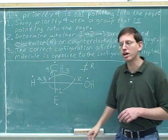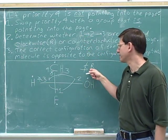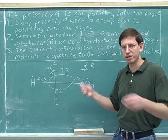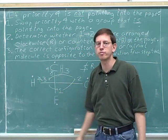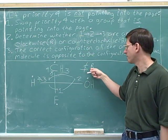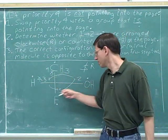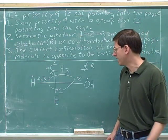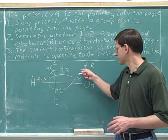Let's review the notation. Once we saw the number four was not pointing into the page, step one was to swap priority four with a group pointing into the page — and all we had to do was swap the numbers, not redraw the molecule. It's a good idea to cross out your original numbers and write down the new numbers. Then step two, we wrote down the letter S. And then step three, we crossed out the letter S and wrote down R. I recommend you actually write down the letter in step two, then cross it out and write the new letter in step three. Writing those extra steps down on paper makes us less likely to get confused.